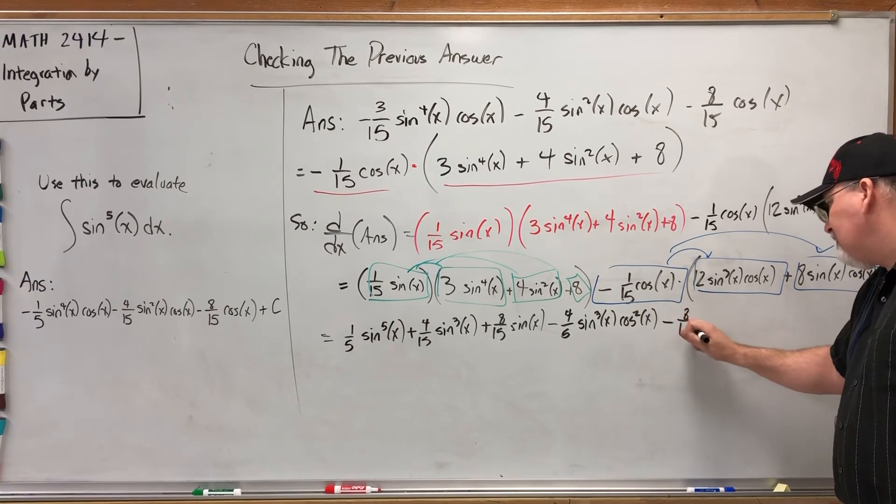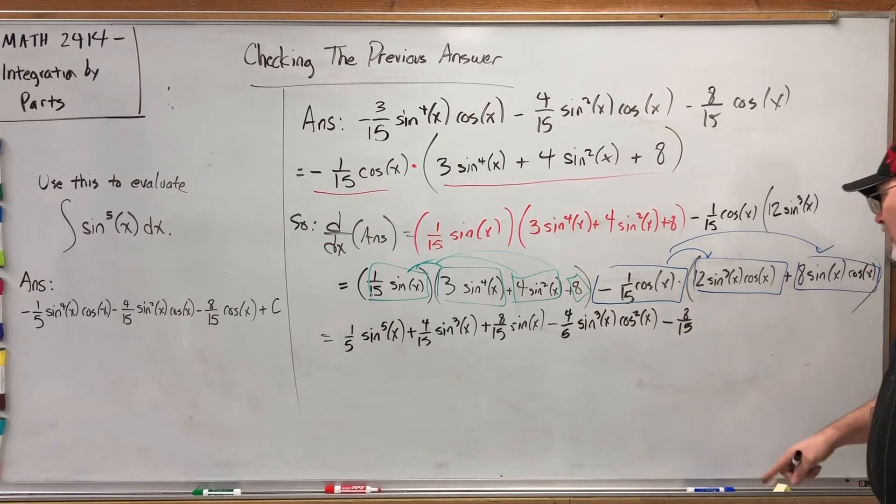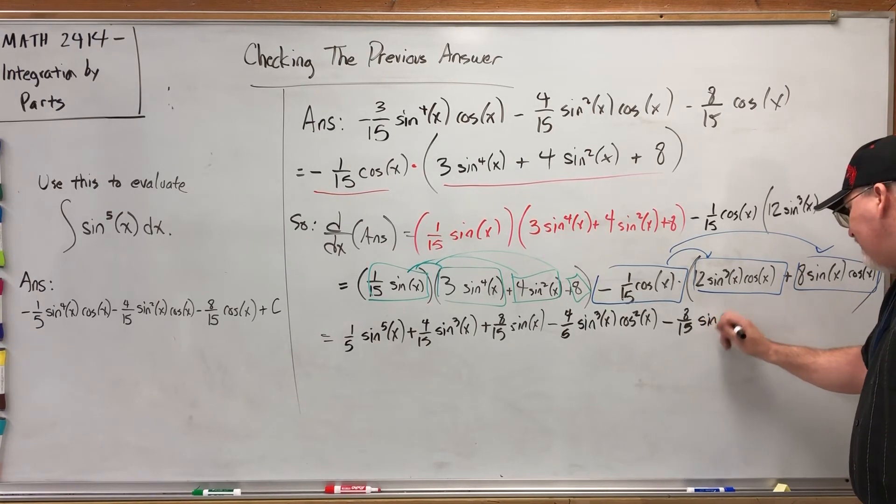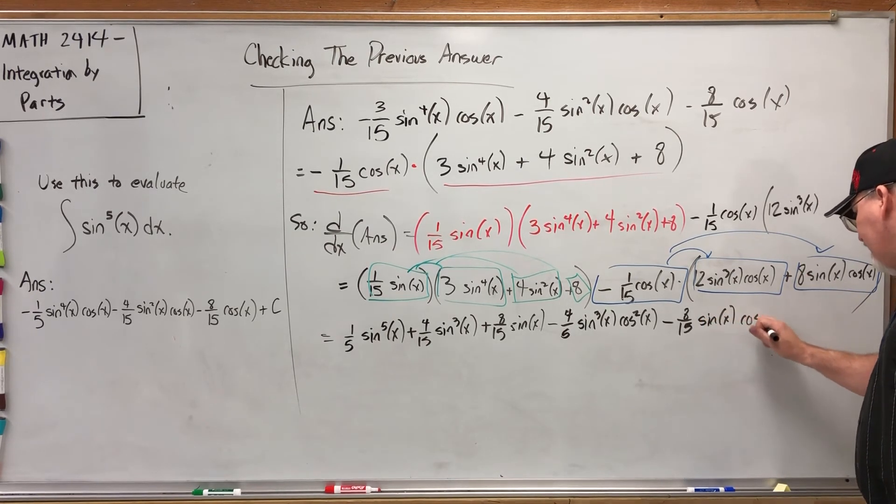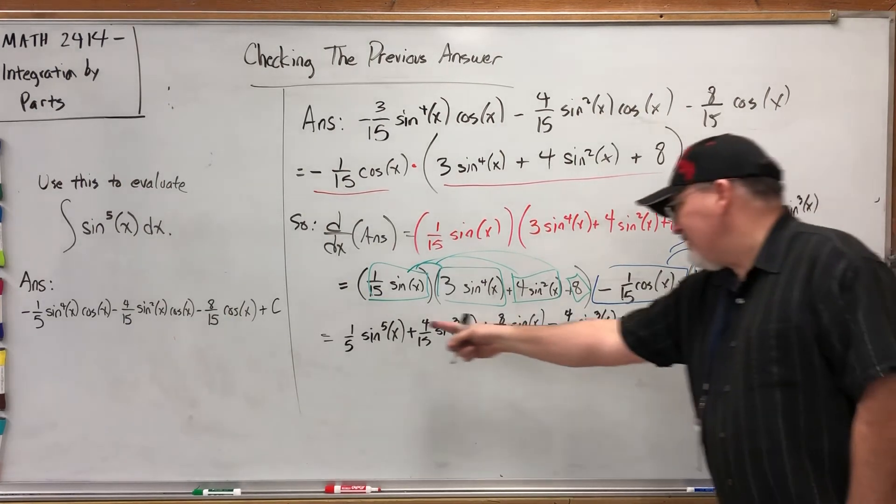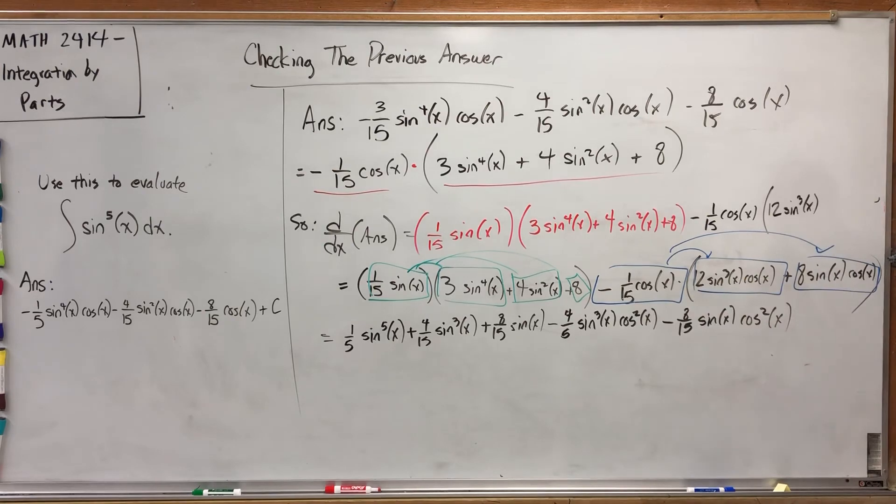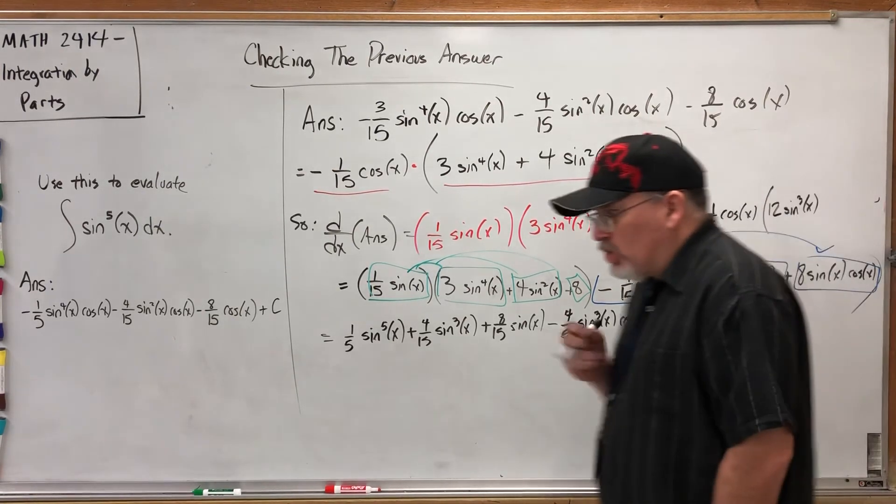And when we distribute across here, negative times positive is negative: eight-fifteenths. Well, that's encouraging—I'm hoping some canceling happens there. But we have sine of X times cosine times cosine, so we have sine of X times cosine squared of X. And at this point it looks like we just got a big mess because there are no like terms. These guys don't have the same power of sines, and these guys have cosines, so there's no like terms over there, and nothing's canceling.